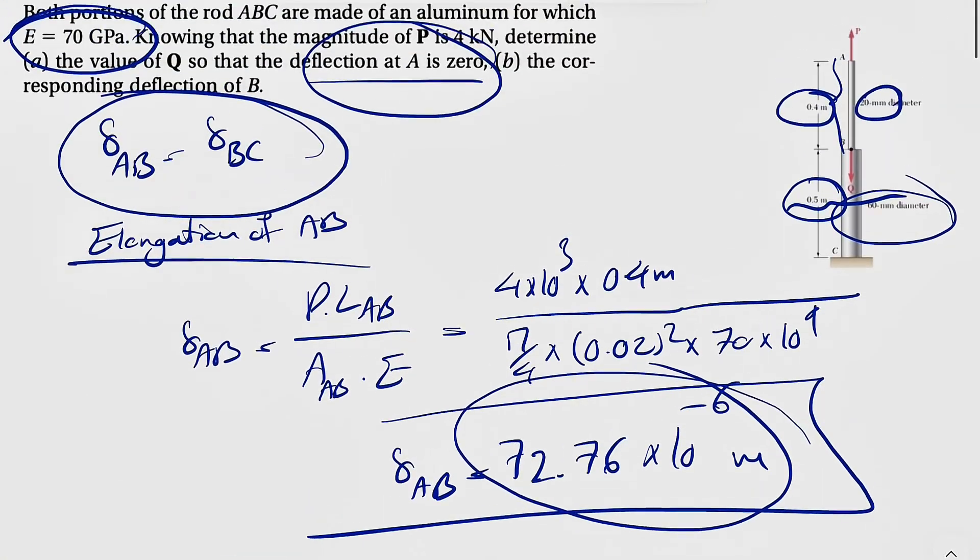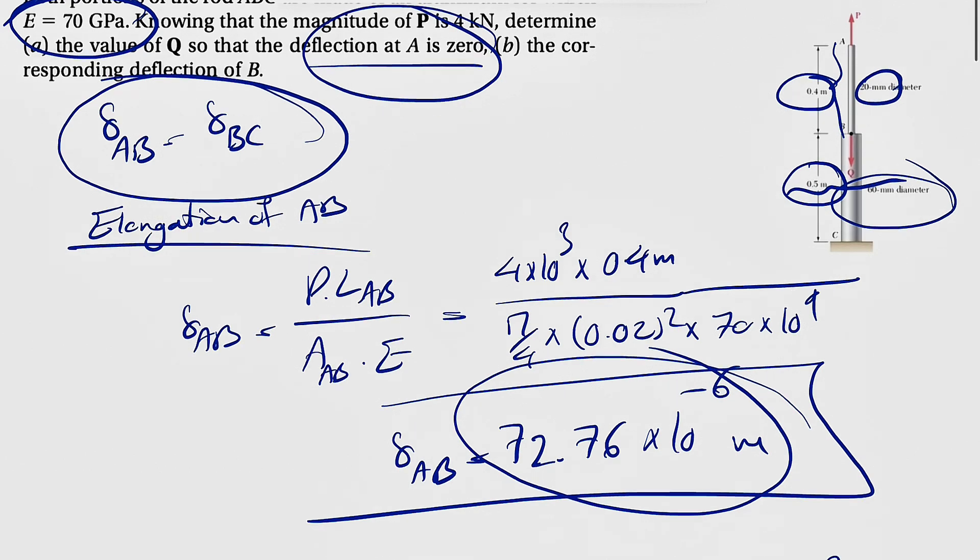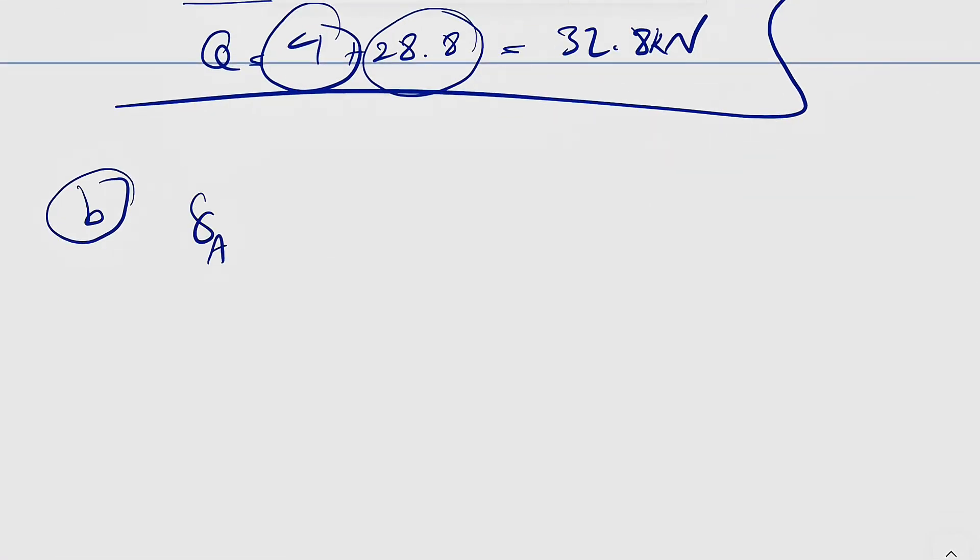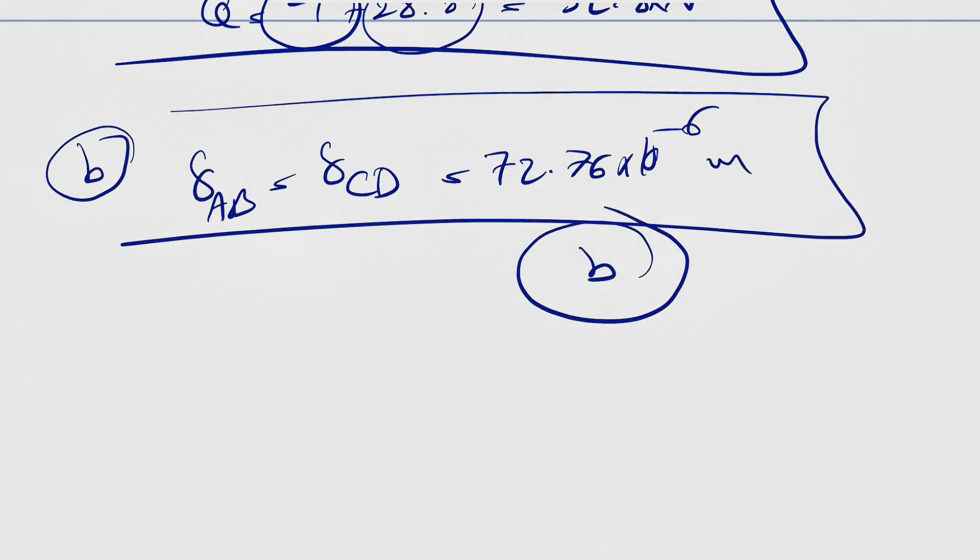The B part, the question is asking us to find the corresponding deflection of B, which, as I said, they're all the same. Deflection of AB equals deflection of CD, which was 72.76 times 10 to the minus 6 meters. This is going to be the answer for the B part of the question.